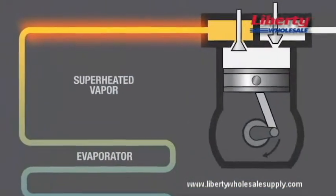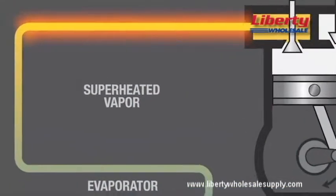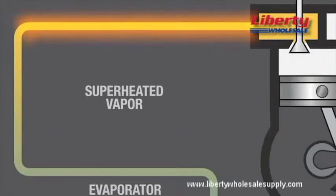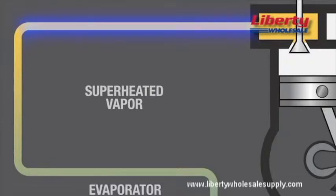If superheat is too high, then not enough refrigerant is flowing to the evaporator, resulting in poor refrigeration and excess energy use. If the superheat is too low, then too much refrigerant is flowing to the evaporator, meaning liquid is getting back to the compressor and causing damage.